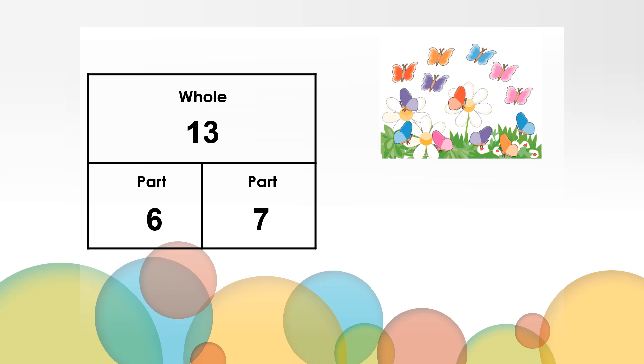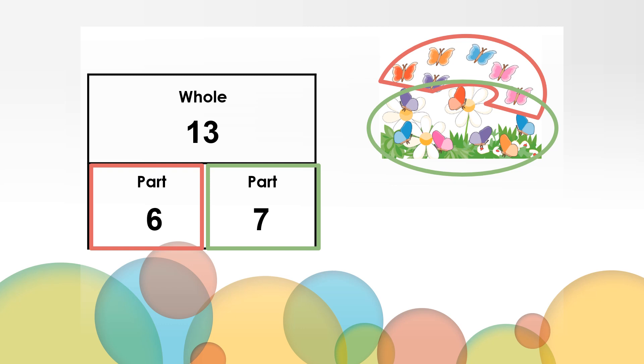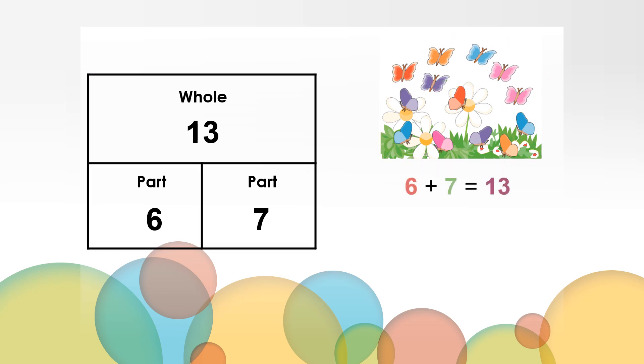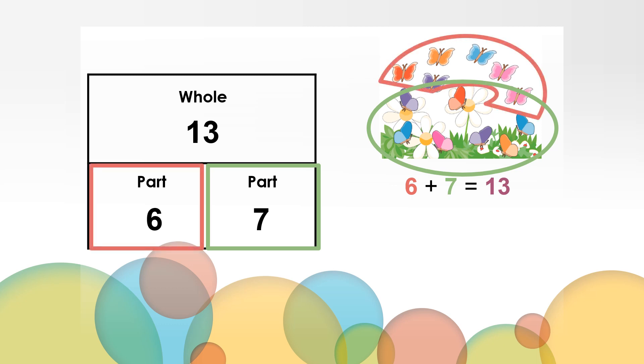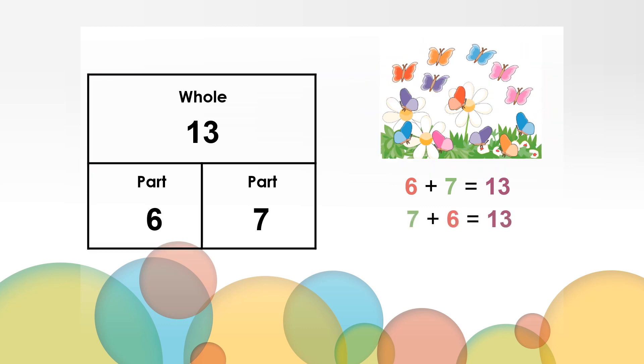There are a few different facts that you might have written to match the picture and we're going to use this part, part, whole chart to help us organize our thinking. You might have started with counting the part with the six flying butterflies and then added the other part with the seven resting butterflies. When you combine or put those two parts together, you get a total of 13. So you may have written 6 plus 7 equals 13. Or maybe you started with the other part, the seven resting butterflies first, and added the six flying butterflies for a total of 13 butterflies. So you wrote the addition fact 7 plus 6 equals 13.